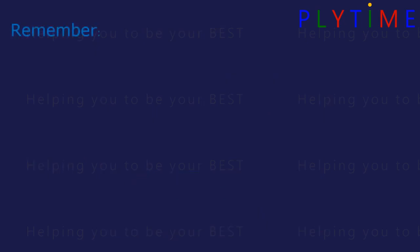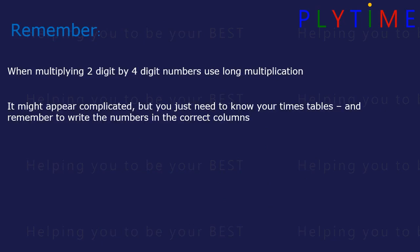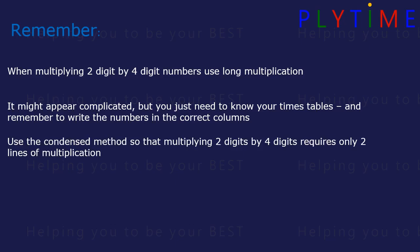Remember, when multiplying two digits by four-digit numbers, use long multiplication. It might appear complicated, but you just need to know your times tables and remember to write the numbers in the correct columns. Using the condensed method, multiplying two digits by four digits requires only two lines of multiplication.